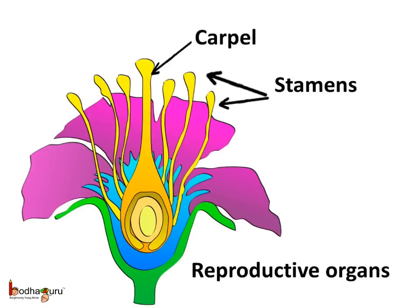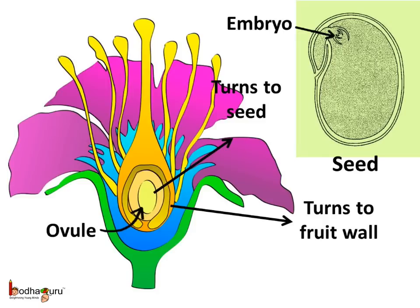To sum up what we learnt today: the flower is the reproductive organ of the plant. The stamen is the male reproductive part, consisting of the filament and the anther. The carpel or pistil is the female reproductive part, consisting of the ovary, style, and stigma. Insects help in transferring pollen from the anther to the stigma. After pollination, the ovule inside the ovary turns into a seed with an embryo, which grows into a new plant under the right conditions.